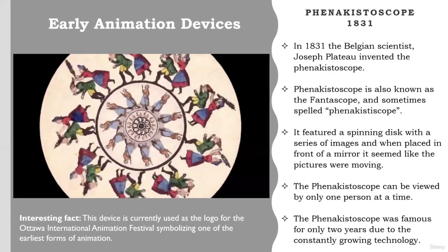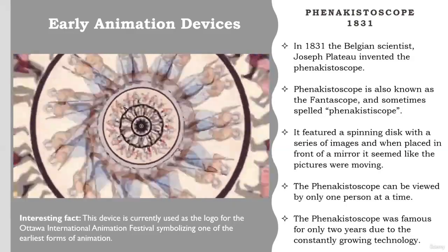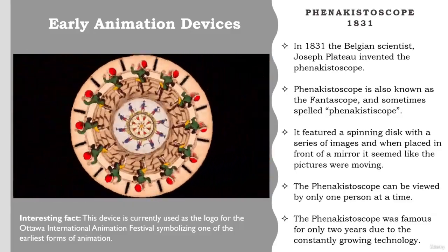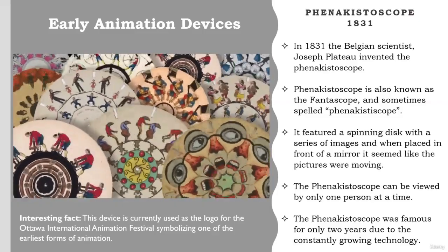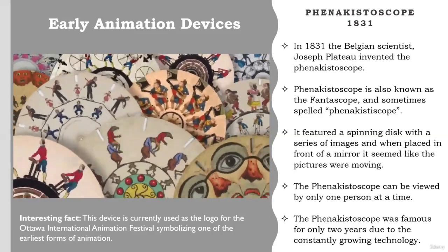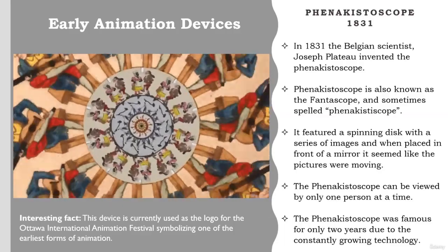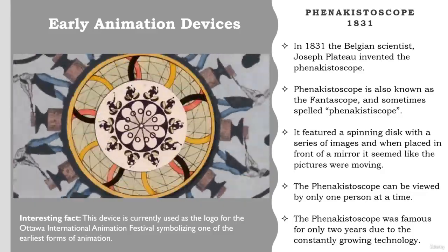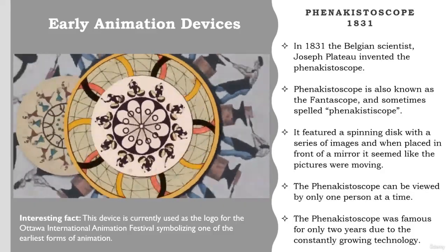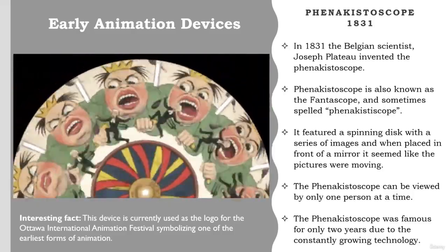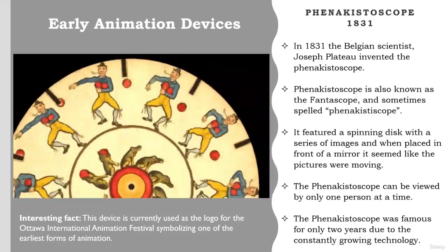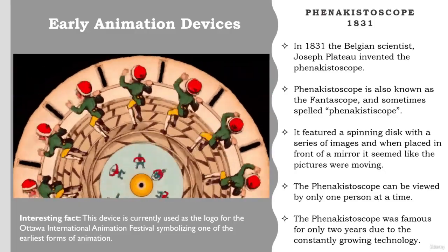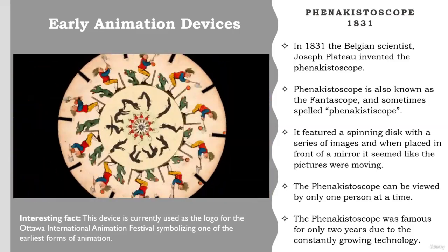In 1831, the Belgian scientist Joseph Plateau invented the Phenakistoscope, also known as the Phantoscope. It featured a spinning disk with a series of images, and when placed in front of a mirror, it seemed like the pictures were moving. The Phenakistoscope can be viewed by only one person at a time — you spin the disk and watch through the openings to see the frame-by-frame animation. The Phenakistoscope was only famous for two years due to constantly growing technology. This device is currently used as the logo for the Ottawa International Animation Festival, symbolizing one of the earliest forms of animation.